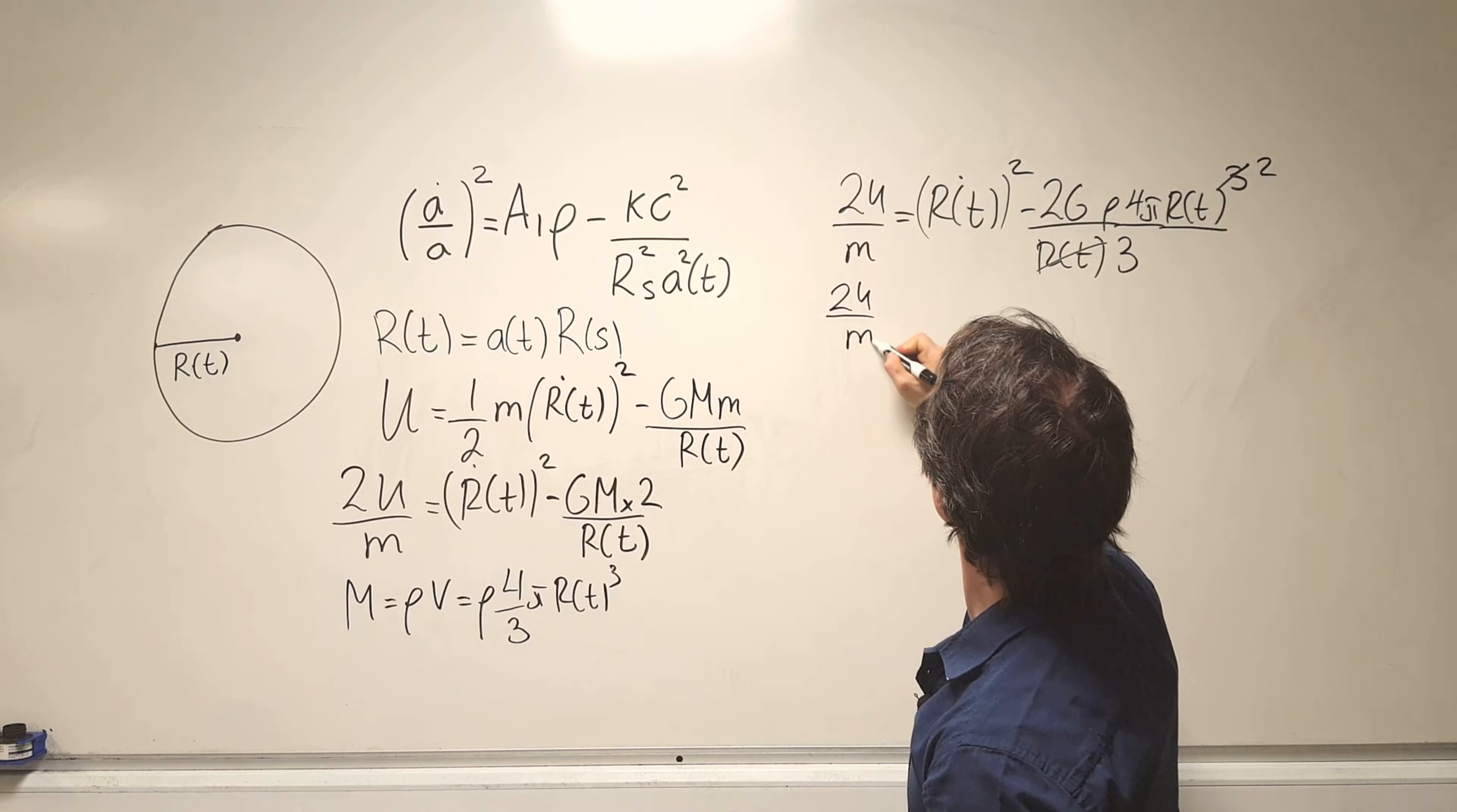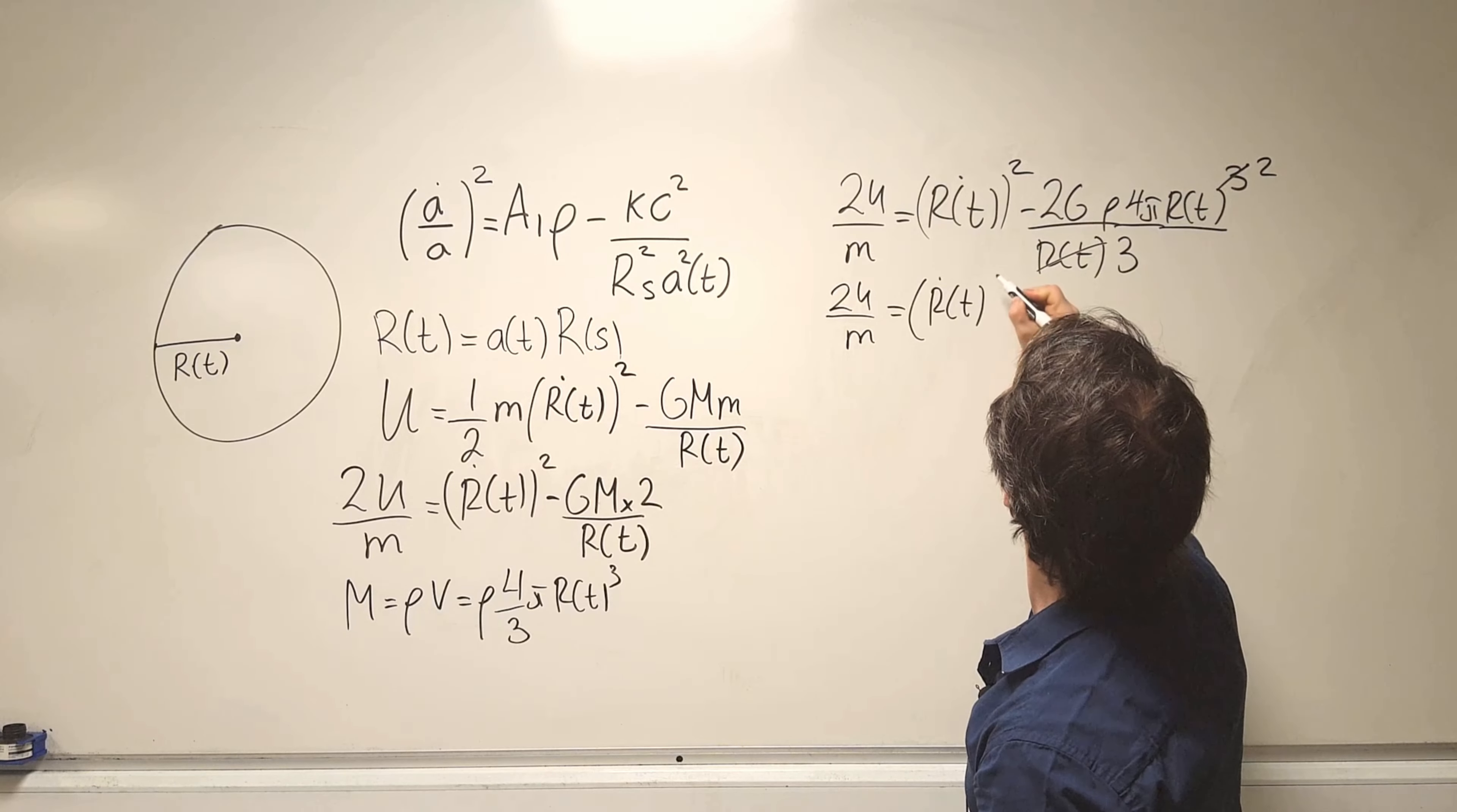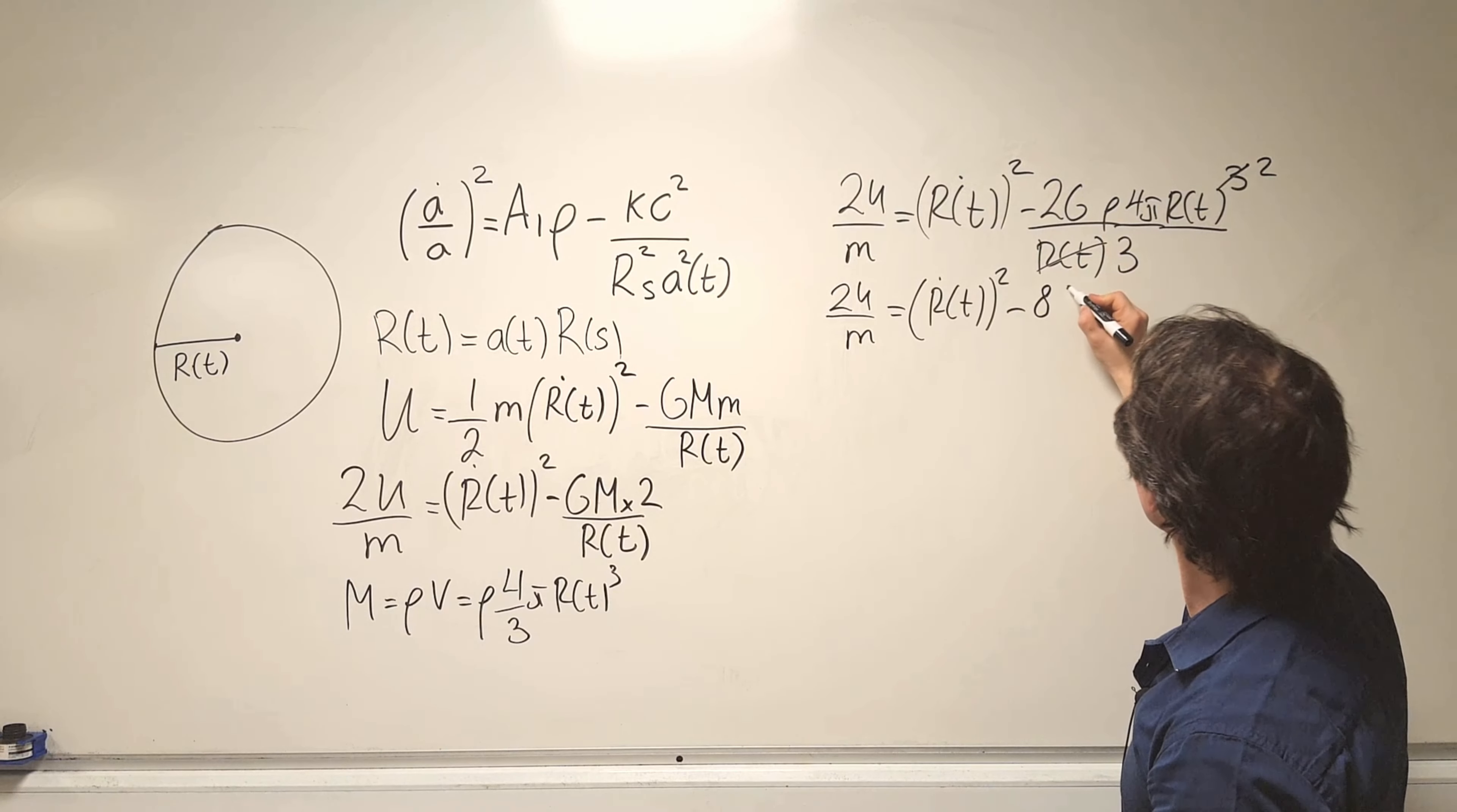We're starting to get there, let's just tidy this expression a little bit more. So what I'm going to get is 2U over m is equal to R dot of t squared.